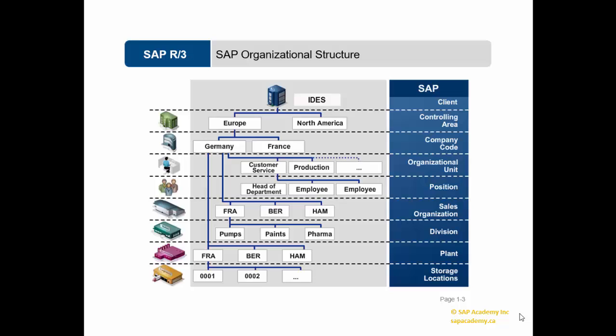Purchase organization: Purchasing organization is an organizational unit under a company or plant which is responsible for procurement activities according to requirements. It is responsible for external procurement. Purchasing organization can be at a client level, such as a centralized purchasing organization, or at a company or plant level, as in company-specific or plant-specific.